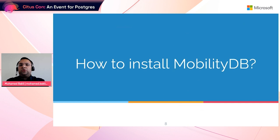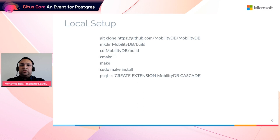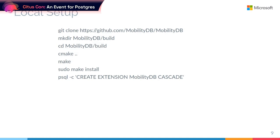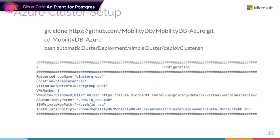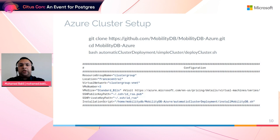To install MobilityDB on a single node, you can compile it from source: clone the project from our GitHub repository, follow the instructions to compile it, and then run the command CREATE EXTENSION MobilityDB CASCADE, which adds PostGIS and MobilityDB to your Postgres database. To install MobilityDB with Citus on Microsoft Azure, we provide a repository with all the information needed. Clone the repository and run a batch script called DeployCluster, which creates a cluster with configuration parameters like number of worker nodes, location, and virtual machine size.